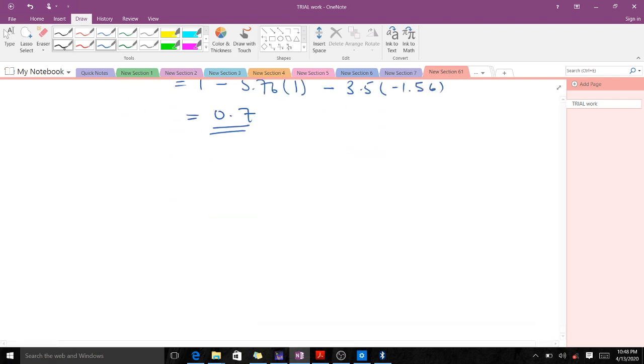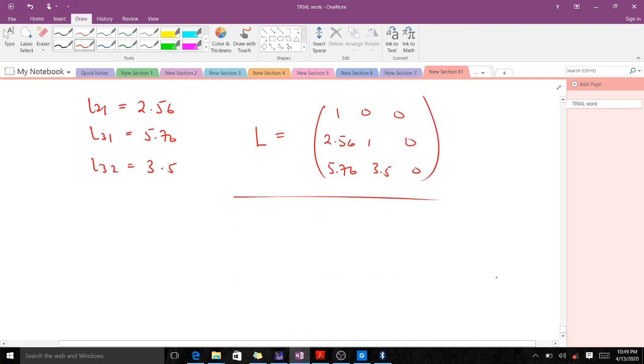Now let me write all the values we had. Remember our L21 was equal to 2.56, our L31 was equal to 5.76, and our L32 was equal to 3.5. That means that our L matrix is 1.0, L21 which is 2.56, 1.0, and L32 was 3.5, L31 which is 5.76, L32 which is 3.5, and 0. So this becomes our lower triangular matrix.